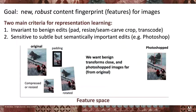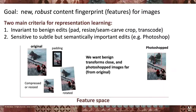What we're interested in creating is a new robust content fingerprint for images — broadly speaking, features or a unique identifier for an image that satisfies two main criteria. First, the features should be invariant to benign edits like padding, compression, or rotation that might occur when uploading an image to the internet. But they should still be sensitive to semantically important changes, like Photoshop manipulations. For example, if an image is photoshopped with King Kong next to a mountain, we want that to be far from the original in our learned feature space, while benign transforms cluster around the original.